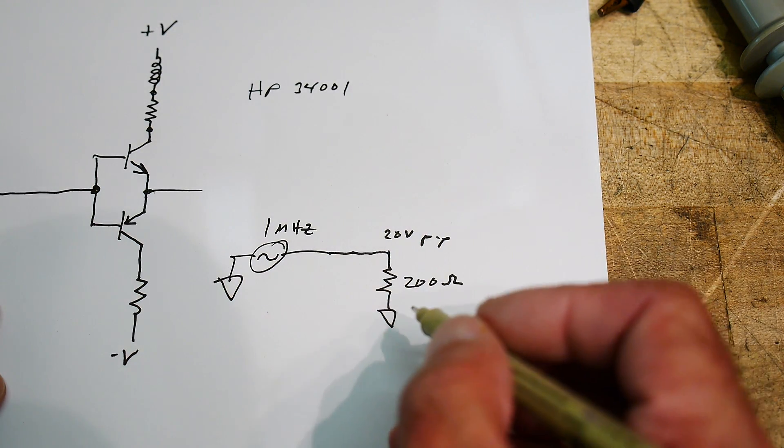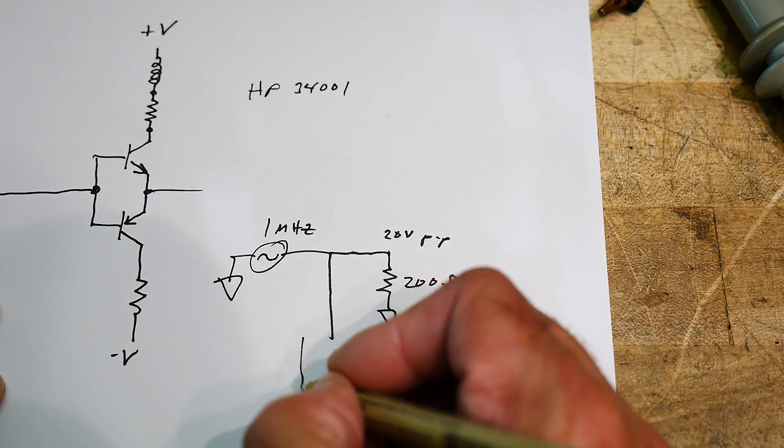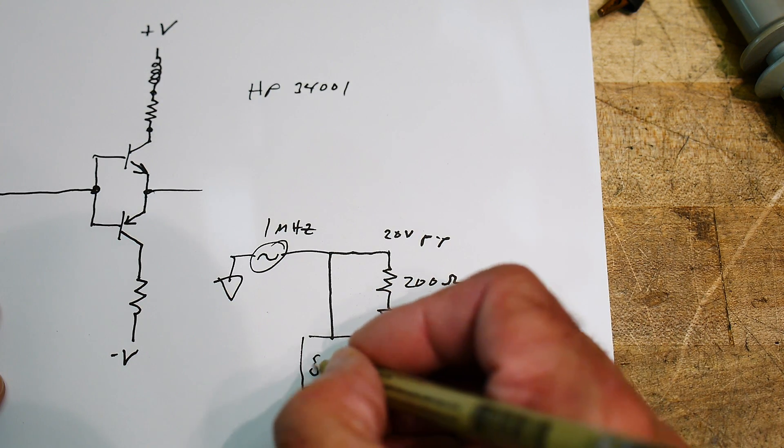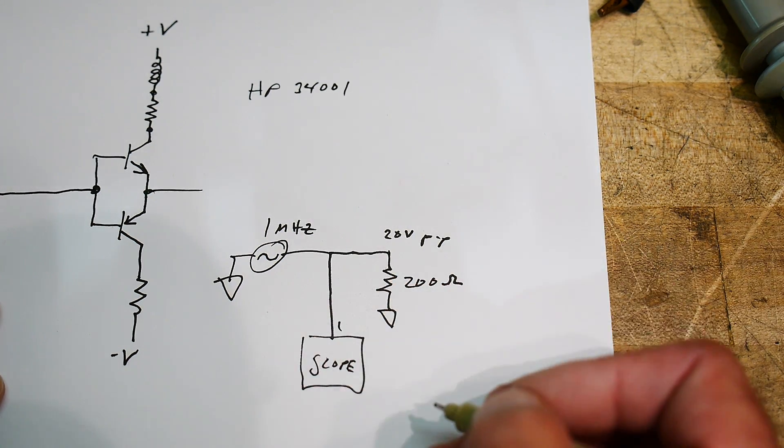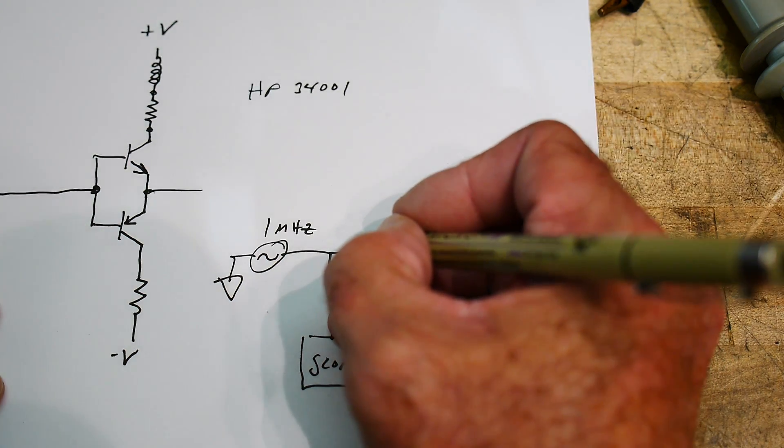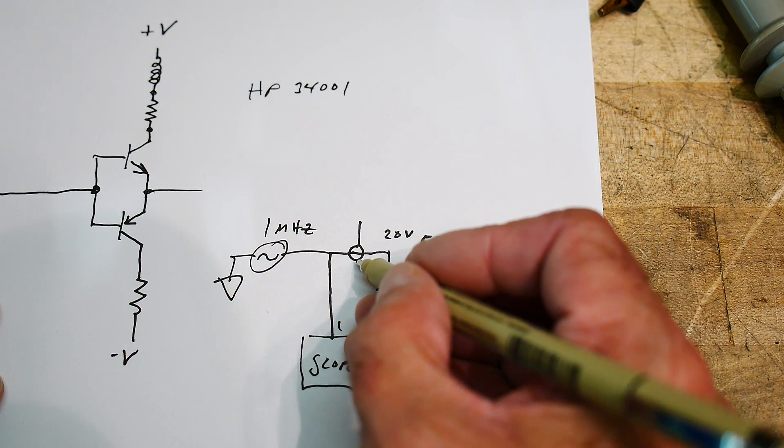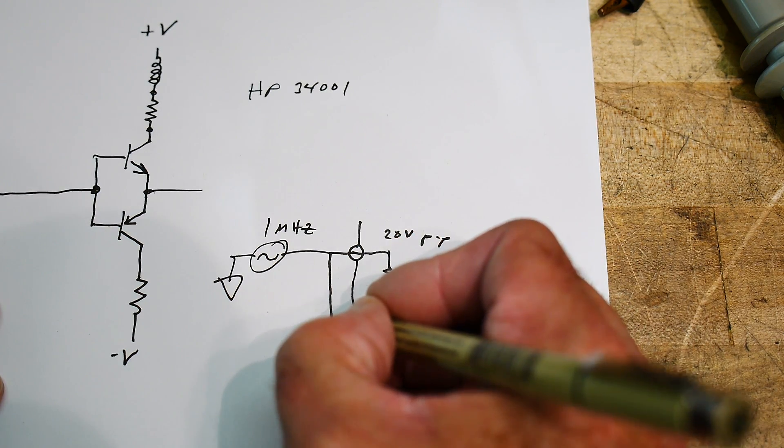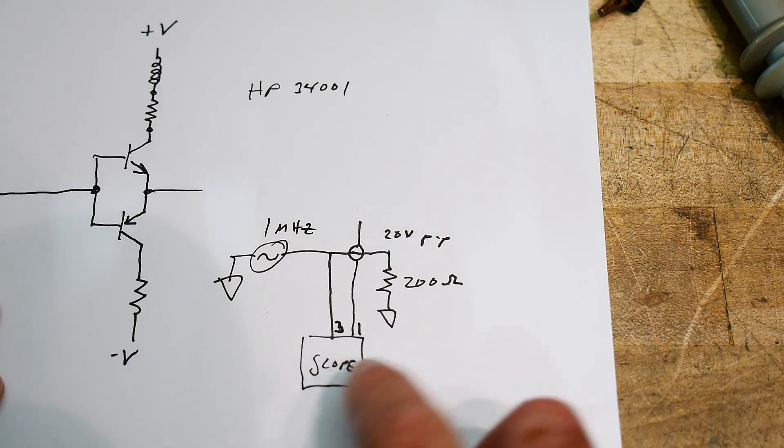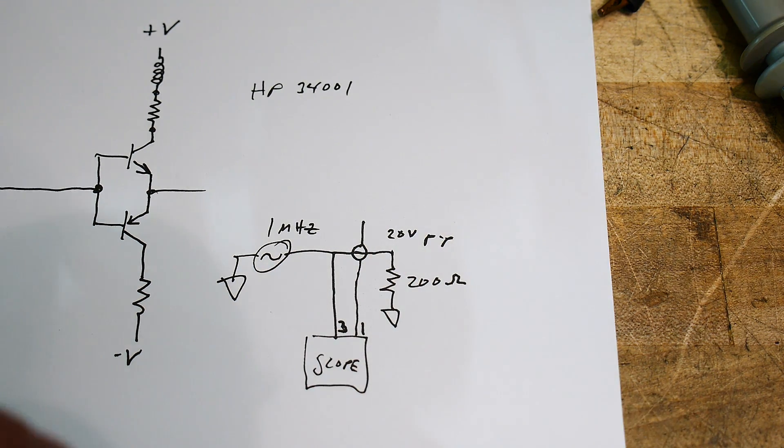So we're going to set this up. I'm going to take a T off of this line and run it into the scope. And this will be on channel one. And then I'm going to put my current probe here and I'm going to run it into channel two. See, this is actually this is going to go into channel three, and this is going to go into channel one. Okay, so the probe is going to go into channel one and the original signal across the 200 ohms is going to go into channel three. So let's go take a look at that.